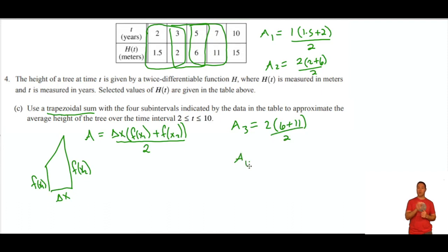The third trapezoid is from 5 to 7. So delta x is going to be 2 again and 6 and 11 are my two f of x values. And I'll simplify these in a minute. And then the final trapezoid is from 7 to 10. So that's got a delta x of 3 and 11 and 15 as the two values there.